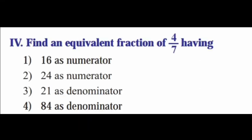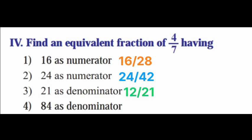Main 4: Find an equivalent fraction of 4/7. First, having 16 as numerator: 4 times 4 is 16, 7 times 4 is 28, so the answer is 16/28. Second, having 24 as numerator: 4 times 6 is 24, 7 times 6 is 42, so the answer is 24/42. Third, having 21 as denominator: 7 times 3 is 21, 4 times 3 is 12, so the answer is 12/21. Fourth, having 84 as denominator: 7 times 12 is 84, 4 times 12 is 48, so the answer is 48/84.